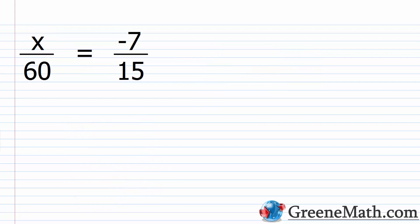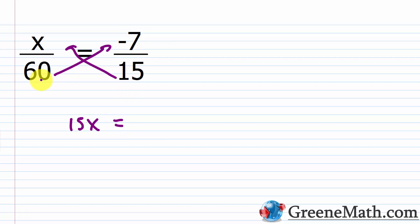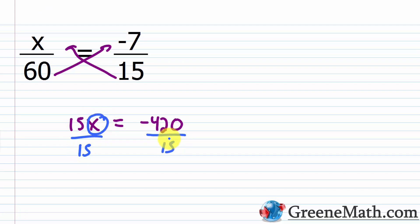What about x/60 = -7/15? Again, we set this up by cross-multiplying. 15 times x is 15x, and this equals -7 times 60. Negative 7 times 6 is -42, put a 0 at the end, so it's -420. Now divide both sides by 15 to isolate x. Negative 420 divided by 15 is -28, so x = -28.